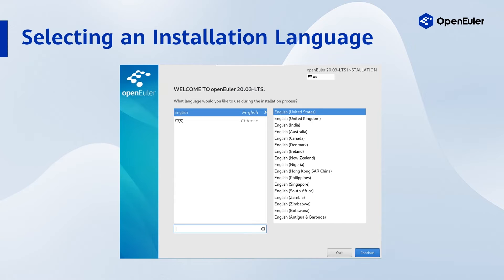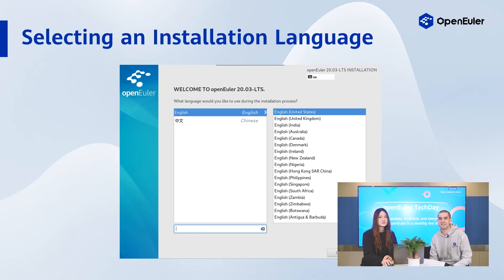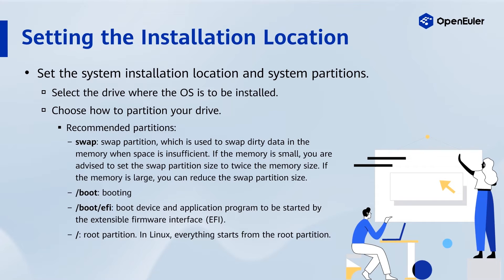Then select an installation language. Here we've selected English, United States. After that, set the system installation location and system partitions. We'll need to select the drive where the OS is to be installed, and choose how to partition the drive.